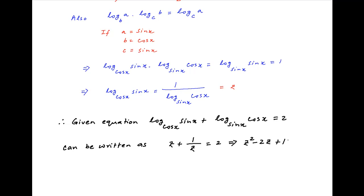This can be rearranged as z square minus 2z plus 1 is equal to 0 or z minus 1 whole square is equal to 0 which implies that z is equal to 1.